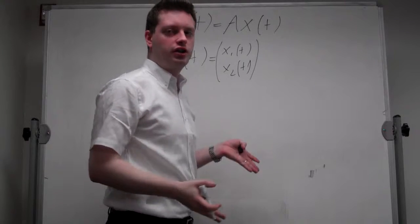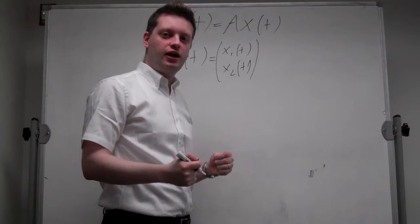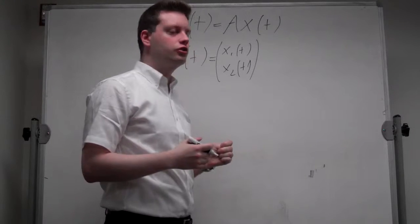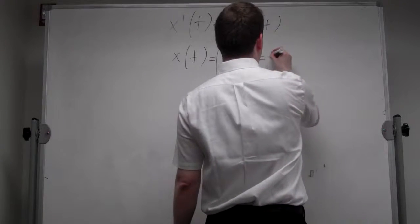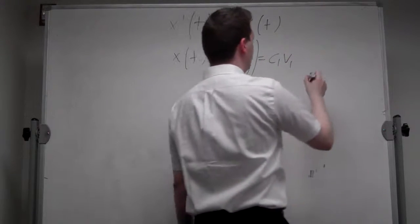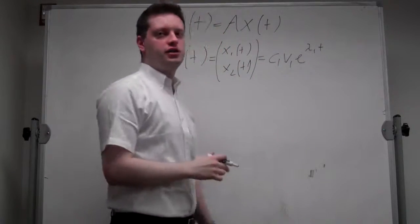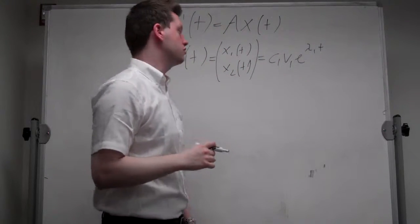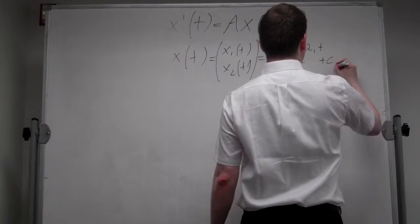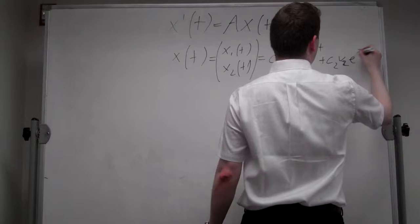In the most general case with real and distinct eigenvalues and hence eigenvectors, the solution is some constant c1 times the first eigenvector of matrix A, e to the power of lambda 1 t, where lambda 1 is the first eigenvalue of this matrix plus c2 v2, e to the lambda 2 t.